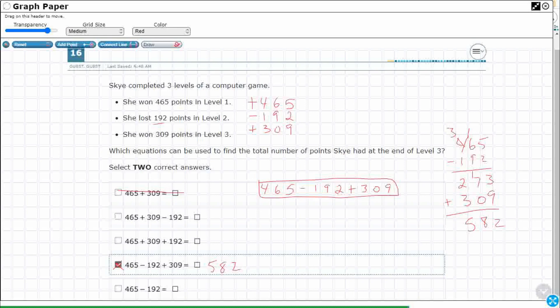And look at this, 465 minus 192. It completely ignores that 309. So those two are incorrect. But look at the difference here, minus 192 plus 192. Look at this C right here. This wants you to add all three, but you're supposed to lose 192. So that means that's incorrect.